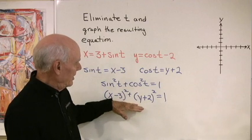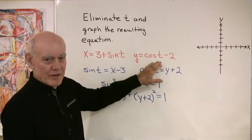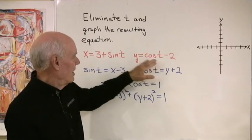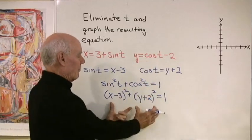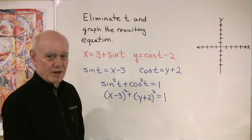So what I've done is I've eliminated that third variable, that third parameter t from this set of parametric equations, and instead of having two equations, now I have one equation with just the two variables in it.